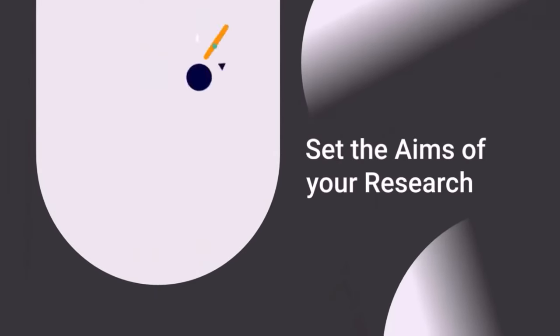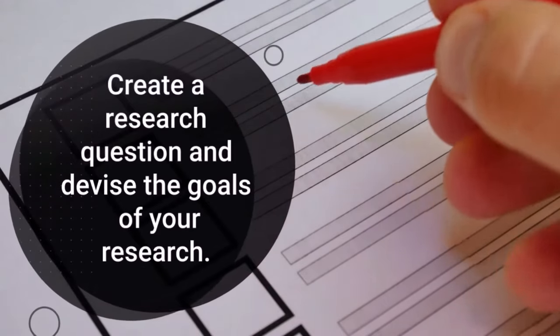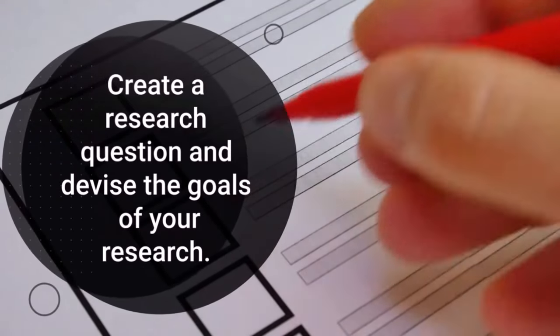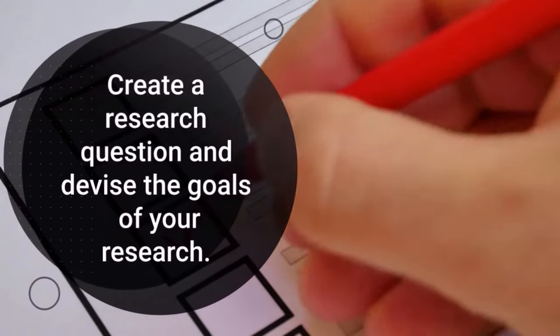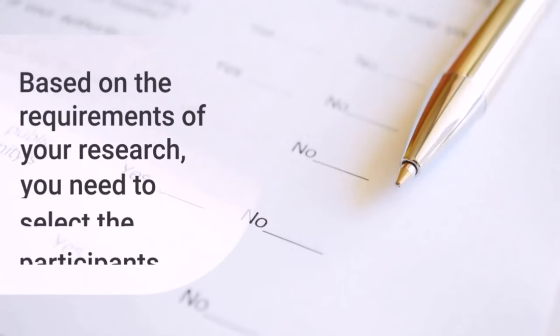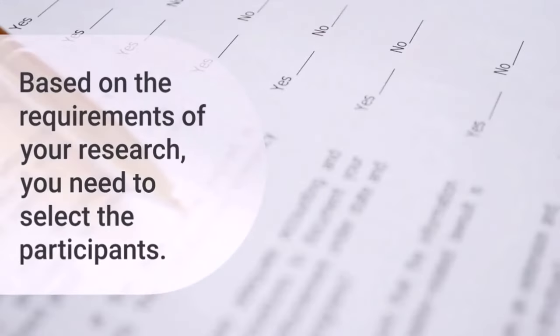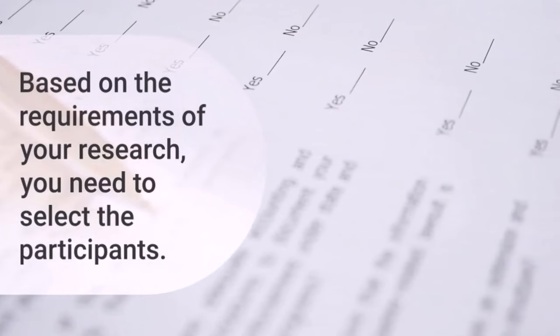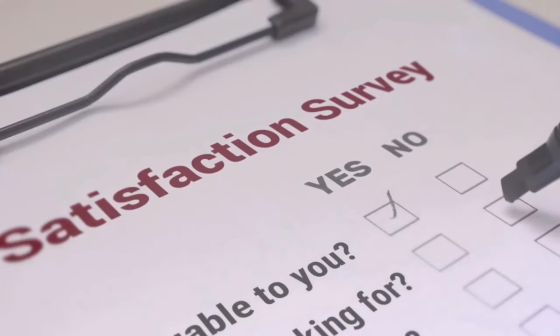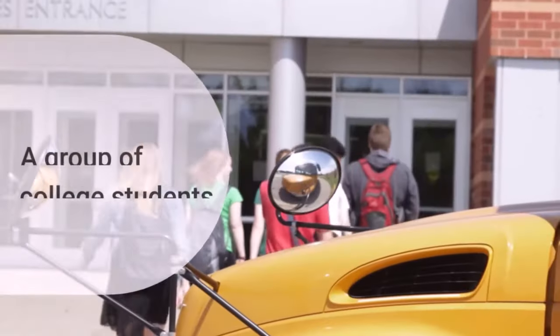Set the aims of your research. Before conducting research, you need to form a clear picture of the outcomes of your study. Create a research question and devise the goals of your research. Based on the requirements of your research, you need to select the participants. You need to decide whether your survey would be online or offline. You need to select a specific group of participants for your research.